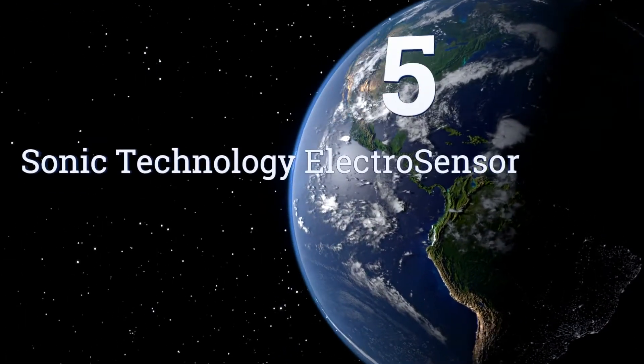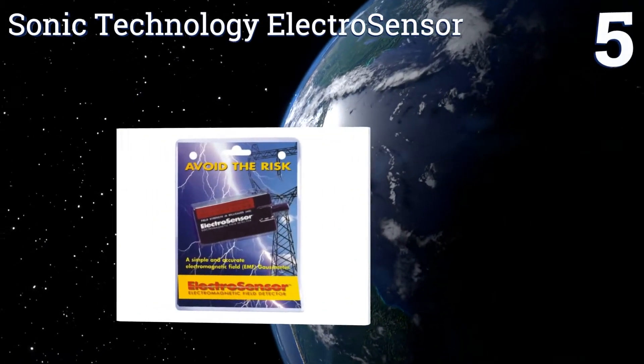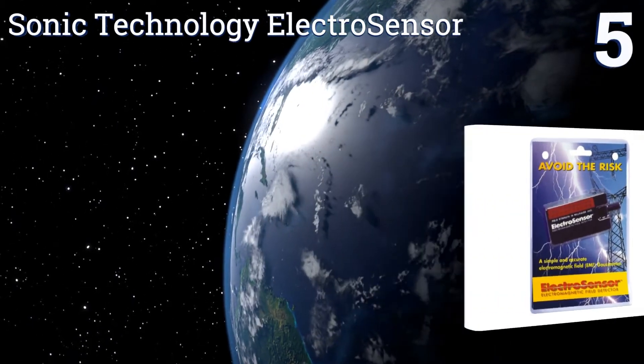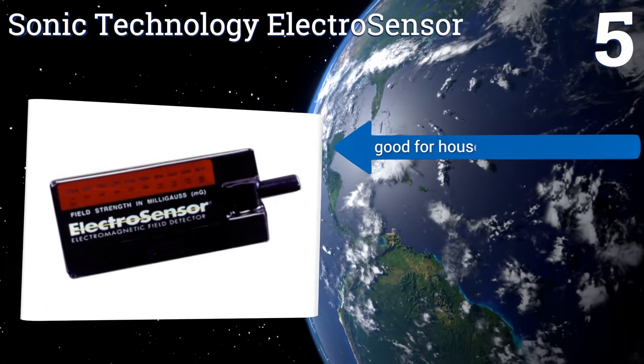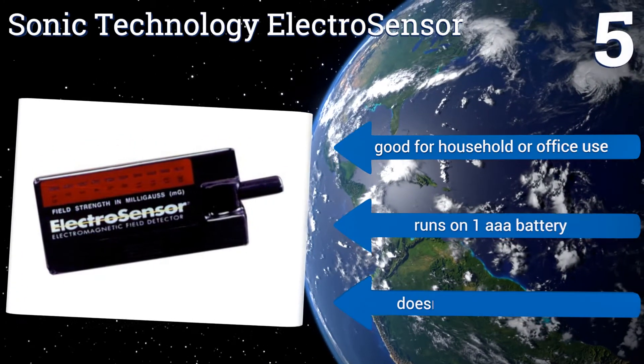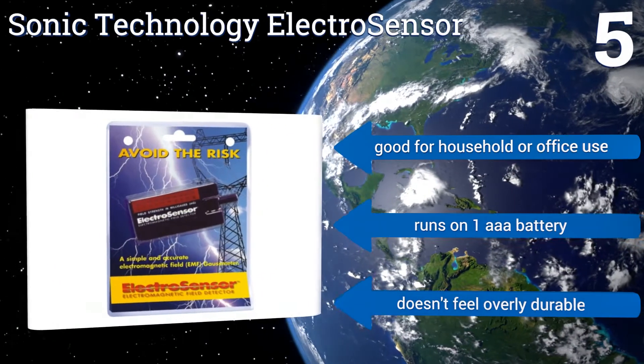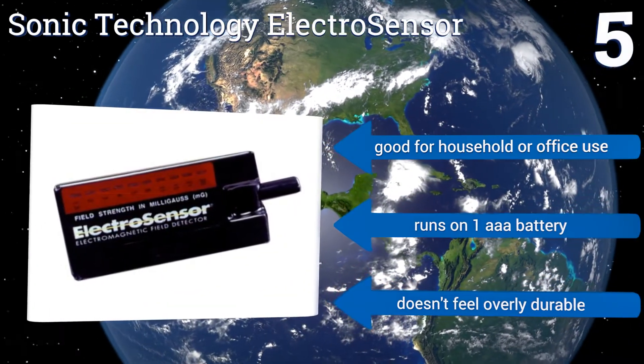Coming in at number 5 on our list, the Sonic Technology Electro Sensor is extremely compact and very low-priced, so it should be no surprise that it's also not as sensitive or effective as some more complex EMF detection tools. Its simple display ranges from 1.5 to 30 milligauss. It's good for household or office use and runs on one AAA battery, but it doesn't feel overly durable.